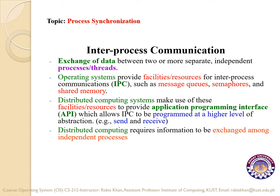Since the operating system now functions in a distributed environment, it further provides more facilities to ensure inter-process communication, such as application programming interfaces (APIs). A distributed environment is one where computational resources are scattered over a network, and your operating system may need help from another operating system on some network. Remote procedural call (RPC) is the best example of how two processes on different machines in a distributed environment help each other.